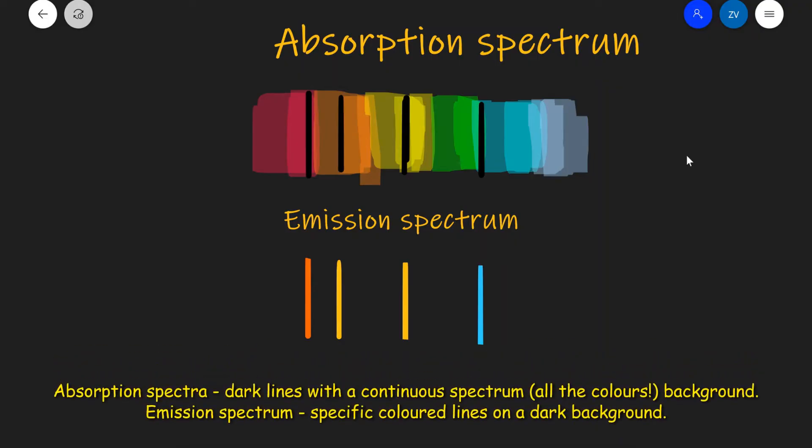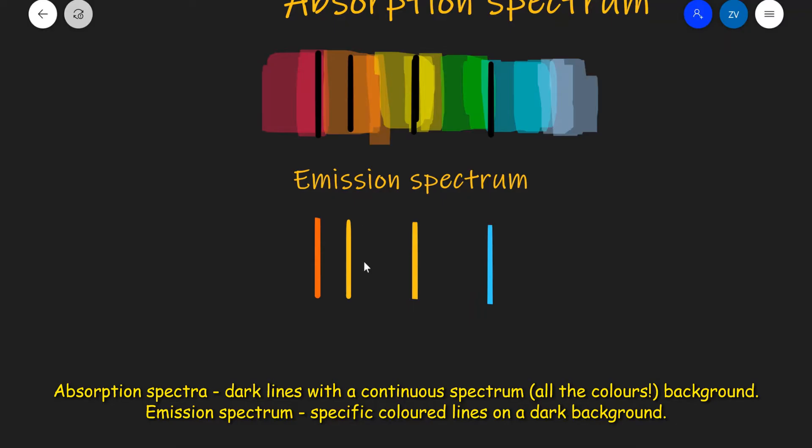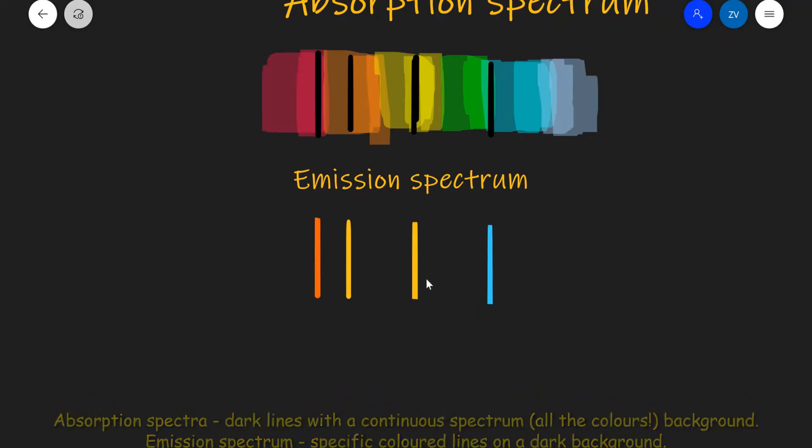The first thing that we need to do is describe them. Remember, an absorption spectrum appears to be a continuous spectrum with some dark lines on it, whereas an emission spectrum are some colored lines with a dark background behind them.